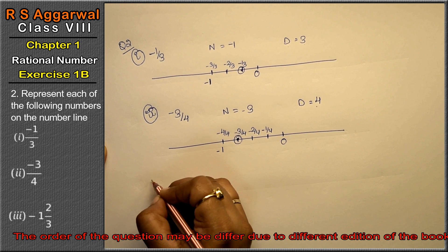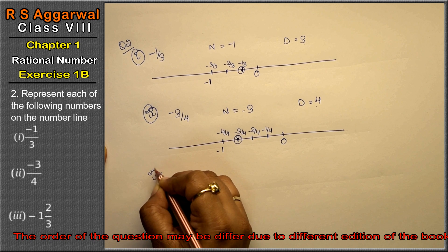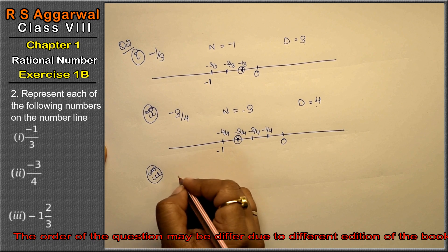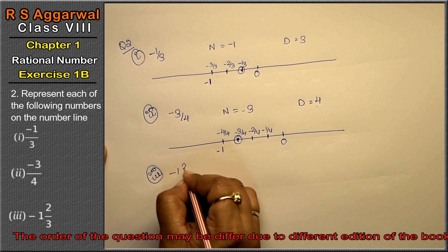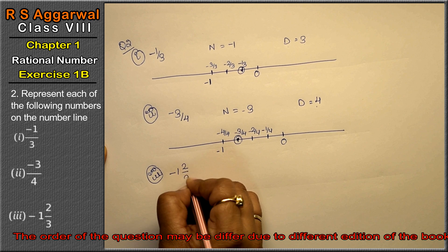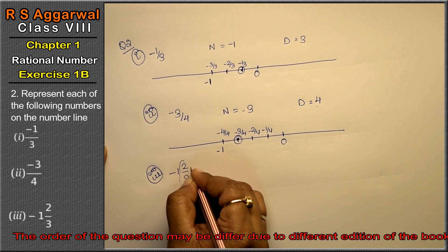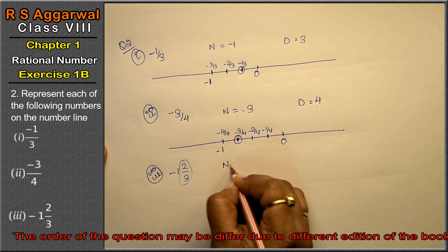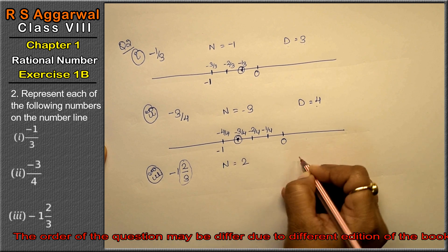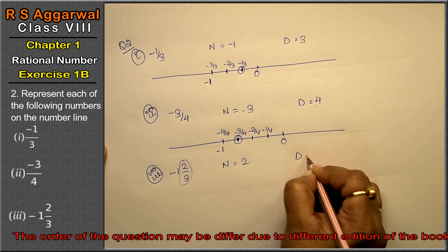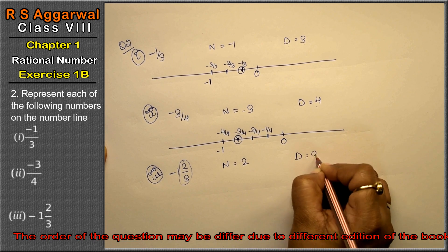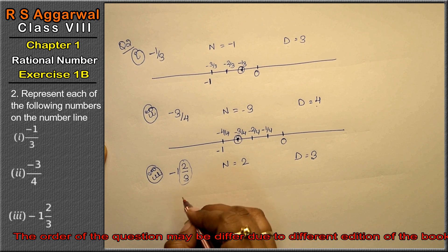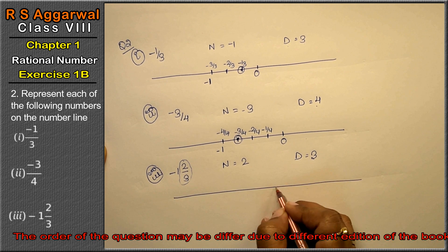Let's do third part. Third part is minus 1 whole 2 upon 3. Iska numerator kya huwa 2 and denominator kya huwa 3, lekin minus ka huwa.